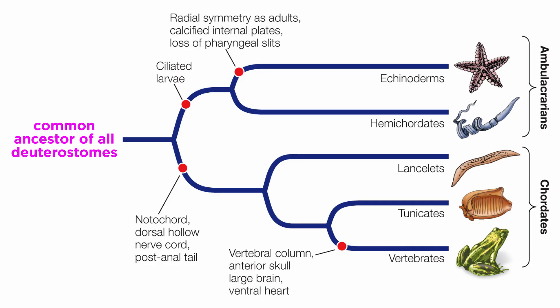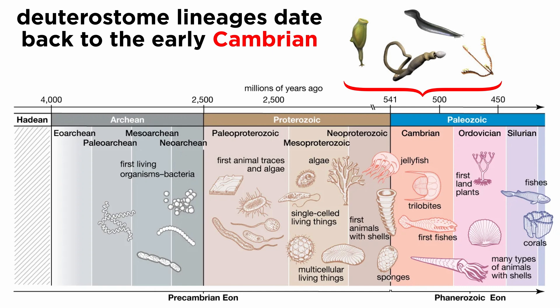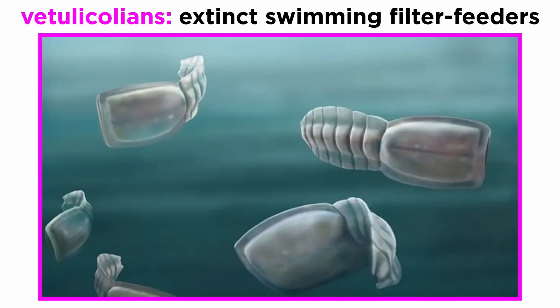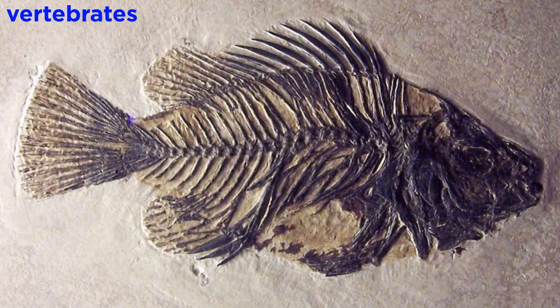Numerous studies have confirmed that Deuterostomia is a monophyletic clade, meaning that it includes all descendants of a common ancestor. The deuterostome fossil record is indeed rich, and multiple lineages were already present in the early Cambrian, including early echinoderms, hemichordates, tunicates, and vertebrates. There are also a number of extinct groups, such as the vetulicolians, which lacked appendages of any kind, and their relationship within the deuterostomes is still debated. Other deuterostome lineages, especially the vertebrates, are well documented in the fossil record due to their evolution of mineralized skeletons, which can be preserved for hundreds of millions of years.